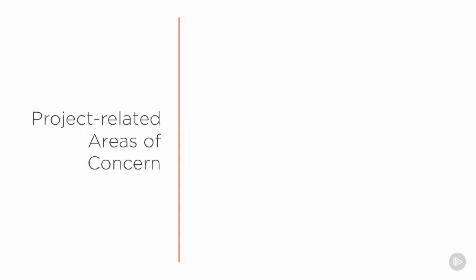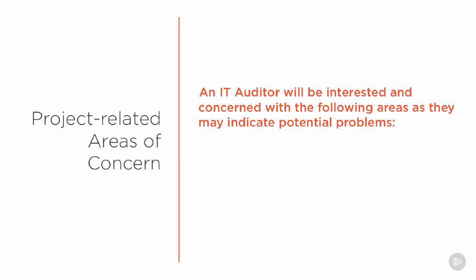An area that's important for auditors is to review IT projects. We have many IT projects that are running, often at a very considerable expense. When we are looking at projects, we want to look for cases of budget overruns — where the organization has spent far more than was actually allocated on a project, or where it's obvious the project is not going to complete within its allocated budget.